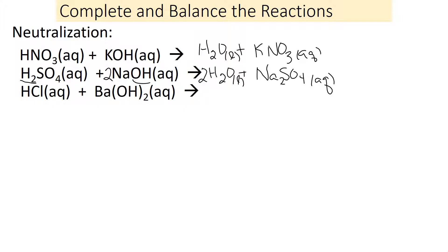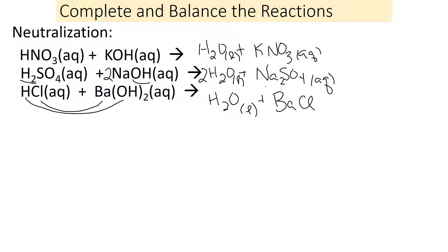Last neutralization: H goes with OH — that's water liquid. Ba goes with Cl: Ba is 2+ and Cl is −, so we need BaCl2. Going back to the same idea: we have 2 hydroxides, so we need 2 H's — put a 2 in front of HCl. That works out with our 2 Cl's as well. And that makes 2 waters. Balanced.